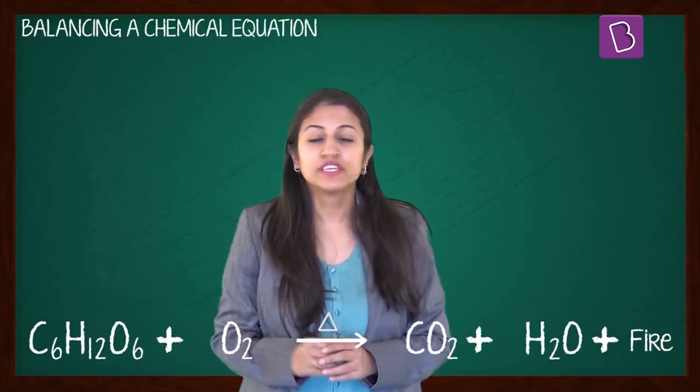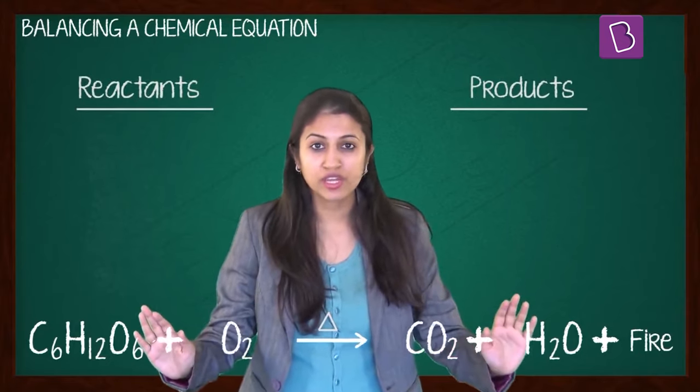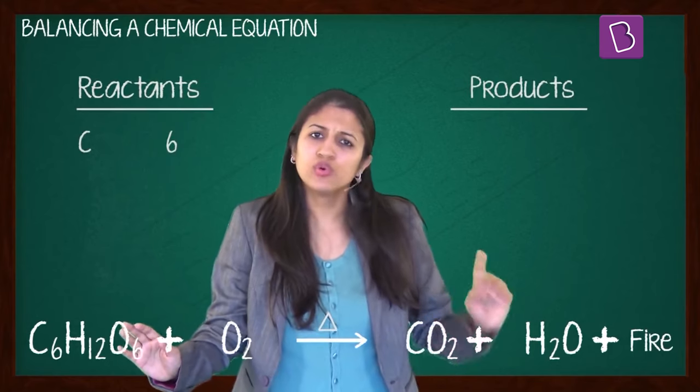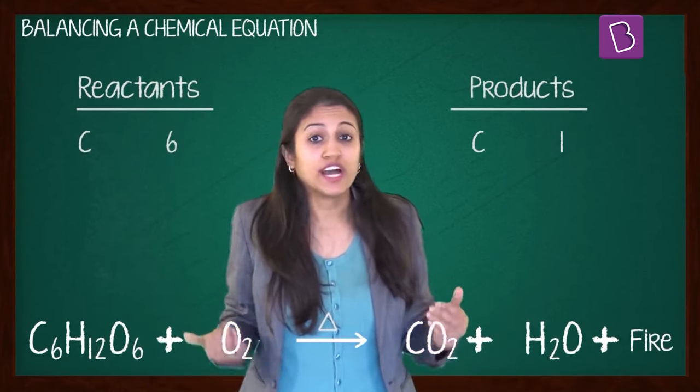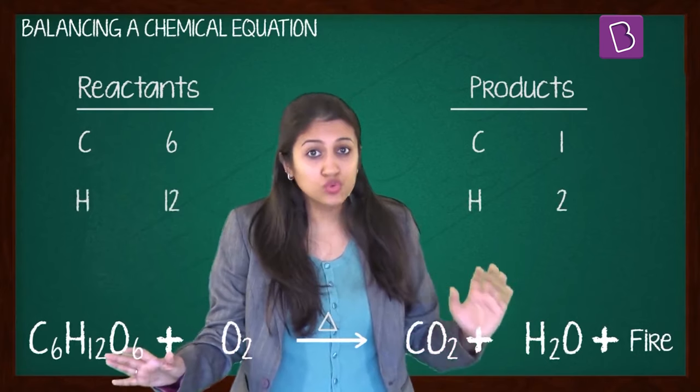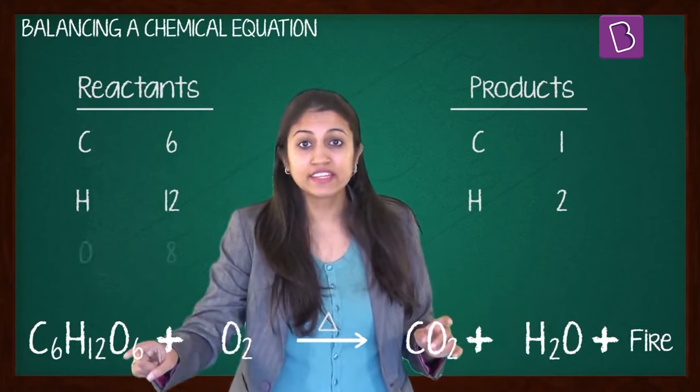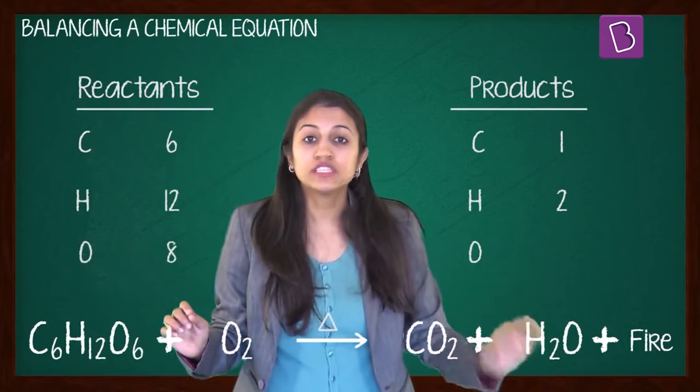Let's compare the number of elements in the reactants and the products. When it comes to carbon, there are 6 atoms in the reactant and only 1 in the product. If you consider hydrogen, you have 12 in the reactant and only 2 in the product. And finally, if you look at oxygen, there are 8 in the reactant and just 3 in the product.